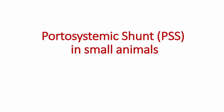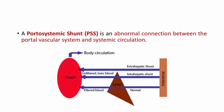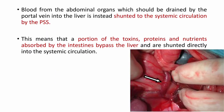A portosystemic shunt is an abnormal connection between the portal vascular system and systemic circulation. In this picture you can see a normal circulation where the blood from the intestine passes through the liver, gets filtered, and filtered blood is passed into the systemic circulation. But in extrahepatic and intrahepatic shunt, extrahepatic shunt occurs outside the liver and intrahepatic inside. In both cases, unfiltered toxic blood is directly transferred to the systemic circulation.